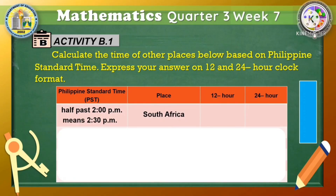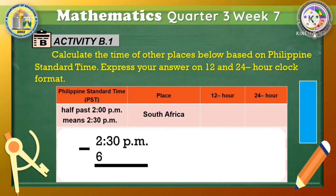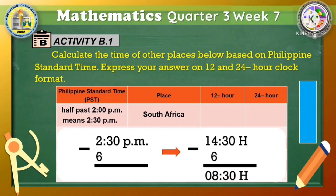You have learned earlier that South Africa is 6 hours delayed. Now we can find the time in South Africa. We need to subtract 6 hours from 2:30 PM. Since it is not possible to subtract 6 from 2, we need to convert 2:30 PM to 24-hour clock format. We will just add 12 hours to 2:30 PM — it becomes 14:30 hours. If we subtract 6 hours from 14:30 hours, we get 08:30 hours. 08:30 hours is in 24-hour clock format, and 8:30 AM is the 12-hour clock format.